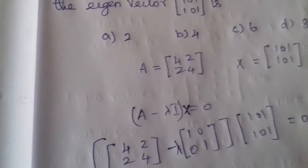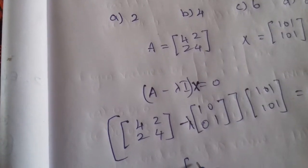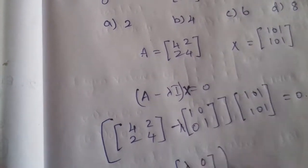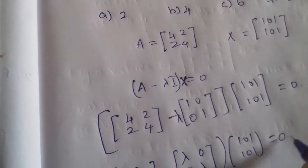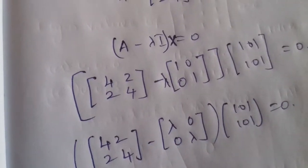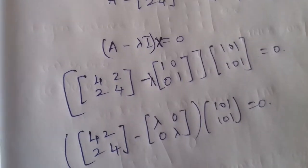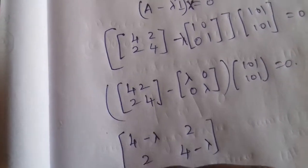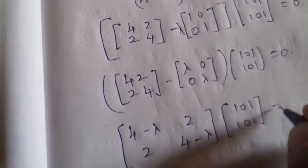Next step: we write [[4 minus lambda, 2], [2, 4 minus lambda]] multiplied by [1, 1] equals 0.